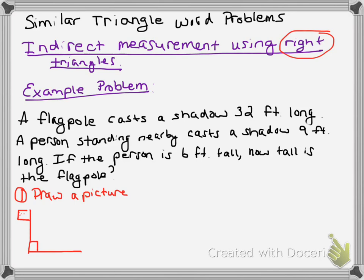So we have a flagpole and we know the shadow is 32 feet long. And I can connect the top of the flagpole to the end of the shadow. And I have a right triangle.